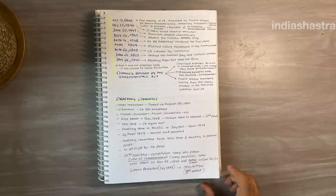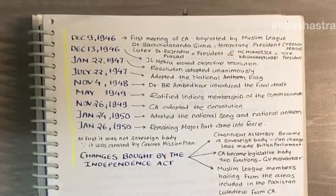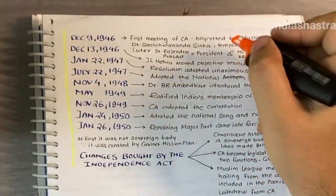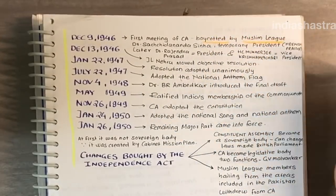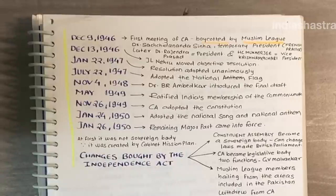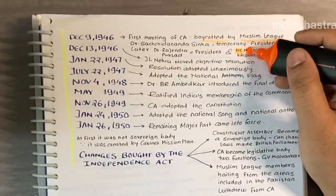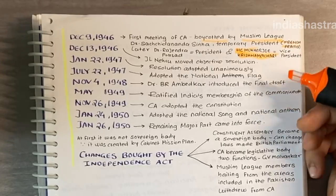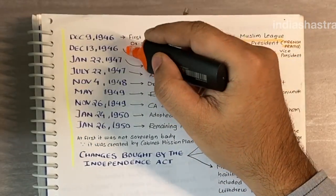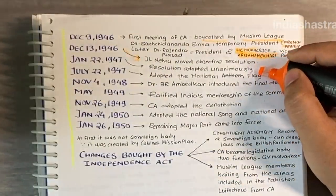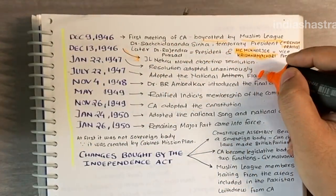On December 9, 1946, the first meeting of the constituent assembly took place. It was boycotted by the Muslim League, and Dr. Sachidananda Sinha was temporary president, being the oldest member of the constituent assembly. Later, Dr. Rajendra Prasad was appointed as president, and H.C. Mukherjee and Krishnamachari were appointed as vice presidents. On December 13, 1946, Jawaharlal Nehru moved the objectives resolution. This resolution was adopted on January 22, 1947. On July 22, 1947, the constituent assembly adopted the national flag.